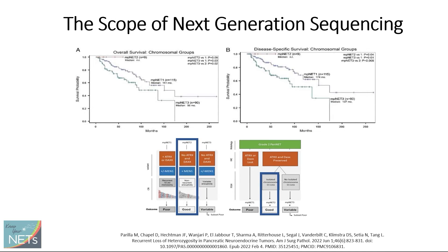Another type of report — the molecular report — gives more information beyond just looking under the microscope. Now you're looking at the cellular level: genes, copy number plots, and methylation. This provides opportunities for personalized therapy. At this point, I want to thank Dr. Quiggin and Dr. Liao for their progressive approach, because now we are doing next-generation sequencing on all neuroendocrine tumors at University of Chicago, hoping this will lead to personalized therapy approaches in the future.